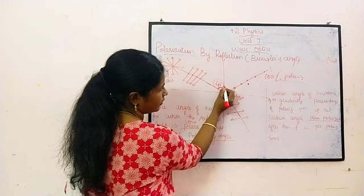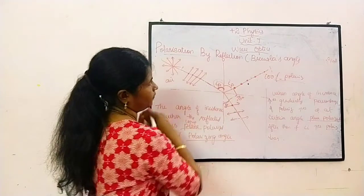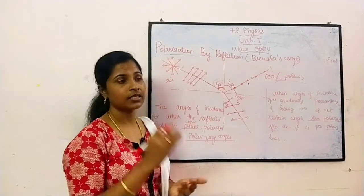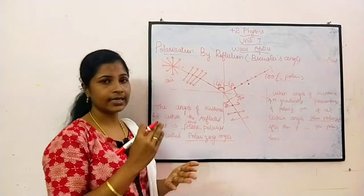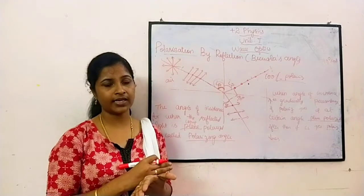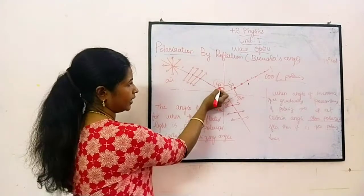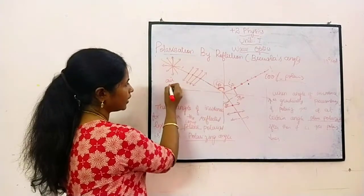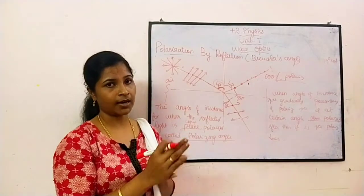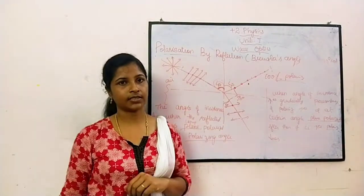If this angle is IP, this angle is also IP. Now Brewster proposed a law which tells the relation between the refractive index and the polarizing angle. We are going to discuss that next.